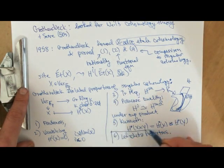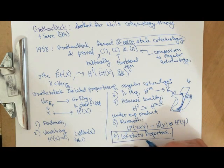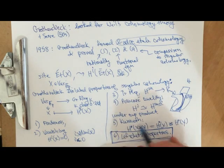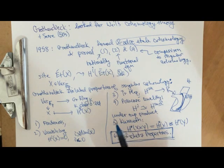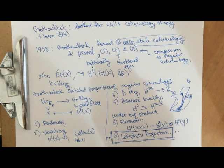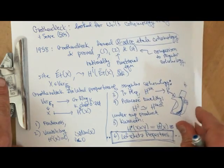These Lefschetz properties were central to Grothendieck's standard conjectures paper. After proving conjectures 1, 2, and 4, he showed that if your cohomology theory has these Lefschetz properties, you can prove the third conjecture — which is what Deligne ultimately proved. Deligne actually did it without going through Grothendieck's method, and afterwards, having proved the Weil conjectures, he also proved the hard Lefschetz theorem using the Weil conjectures.